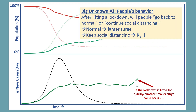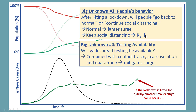However, there's another big unknown: people's behavior. After lifting a lockdown, will people go back to normal or will they continue social distancing? If they go back to normal, the surge will be larger. If they keep social distancing, the R0 will be suppressed.